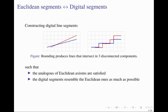Euclidean line segments are one of the most fundamental geometric objects. They have many interesting properties, such as that the intersection of two segments is again a segment. The definition of other mathematical concepts heavily depends on the definition of segments, such as convex regions. Representing Euclidean segments in a digital world is a challenging task.